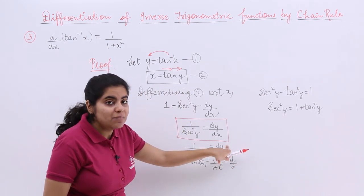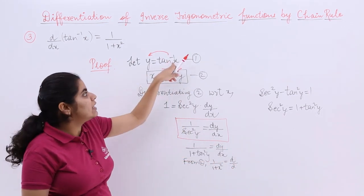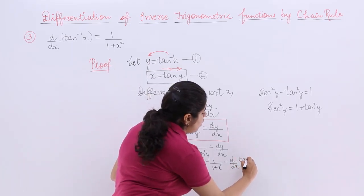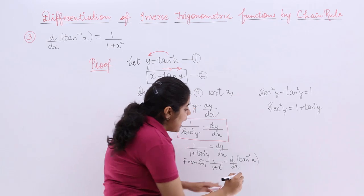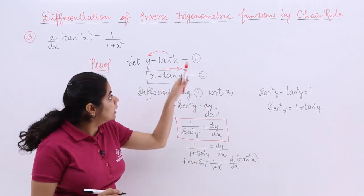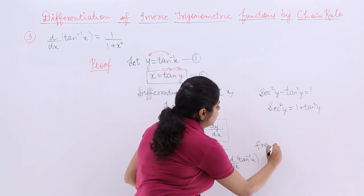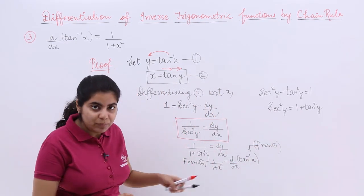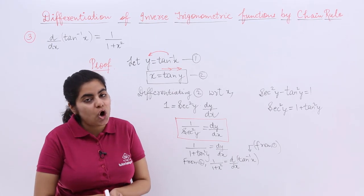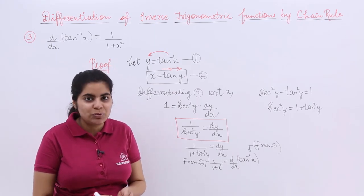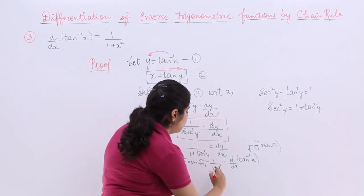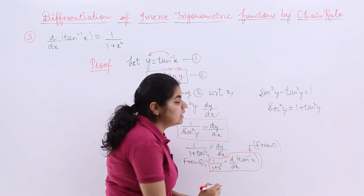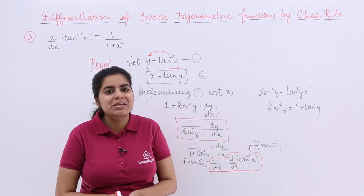And dy by dx, what is y? Y is tan inverse x. So it is basically d by dx of tan inverse x. This substitution is done from 1. So the formula that you have obtained for the differentiation of tan inverse x with respect to x is 1 upon 1 plus x square. This is the formula of differentiation of tan inverse x with respect to x.